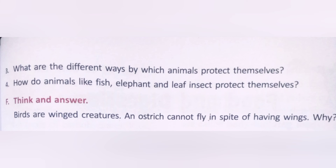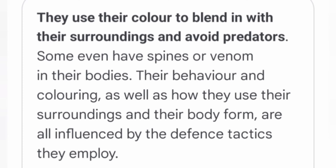Question 4: How do animals like fish, elephant, and leaf insect protect themselves? They use their color to blend in with their surroundings and avoid predators. Some even have spines or venom in their bodies. Their behavior, coloring, use of surroundings, and body form are all influenced by the defense tactics they employ.